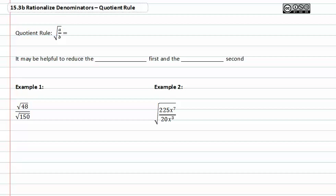In this video we're going to learn about the quotient rule. The quotient rule states that if you have the square root of a fraction, or in this case the square root of a over b, you can rewrite that as the square root of a all divided by the square root of b, and vice versa.